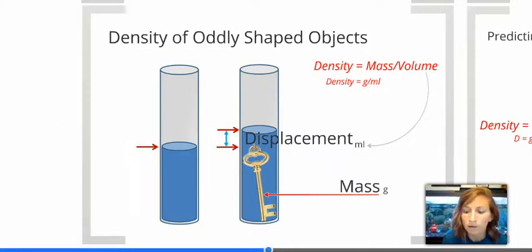So, that's just one way if you have an irregular object. Otherwise, we can usually use common measurements like length times width times height for a solid object like we did with our gummy bears. Or, if it's a liquid, obviously pour it into a graduated cylinder or a beaker.